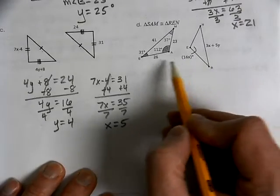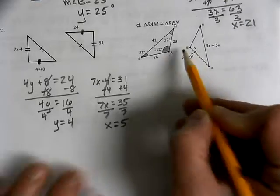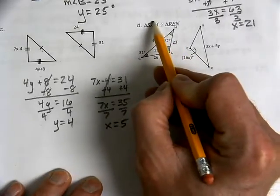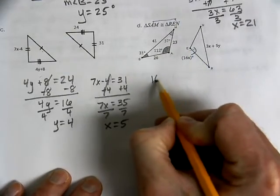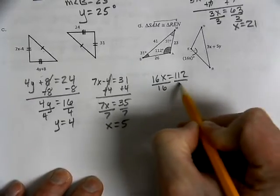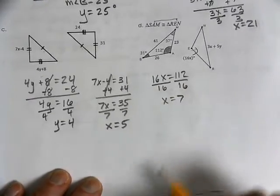Here, we're looking at part D. E is congruent to the A because it's the middle letter apiece. So, 16X equals 112. When we divide, we find out that X equals 7.